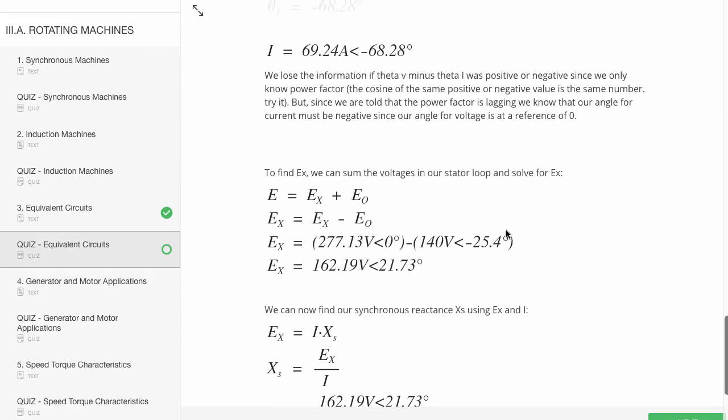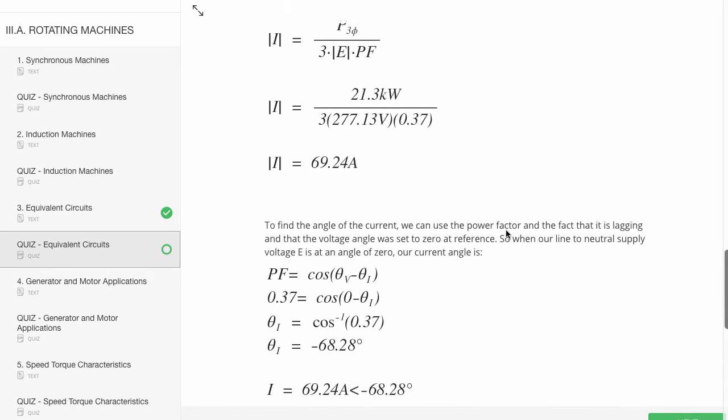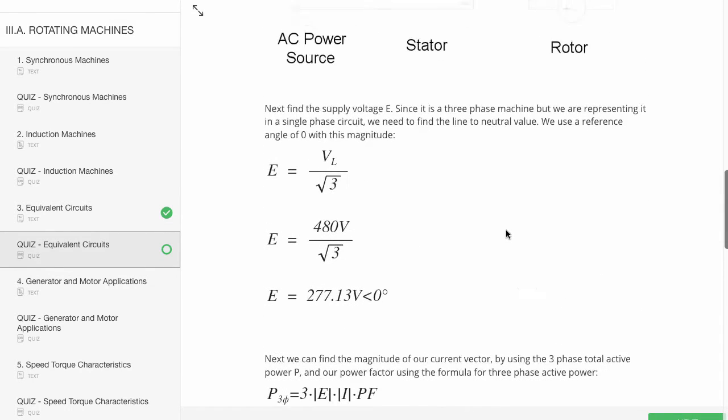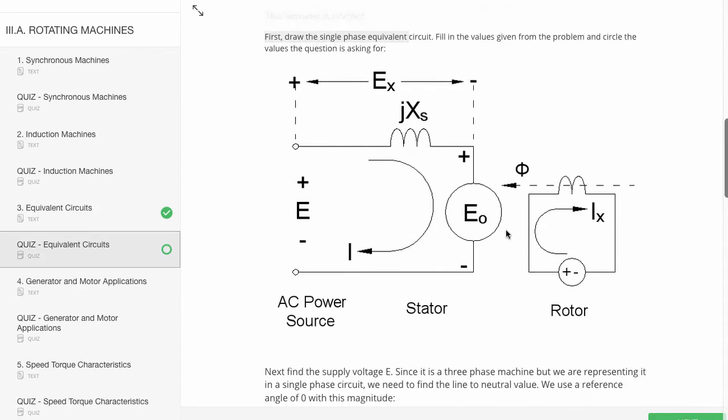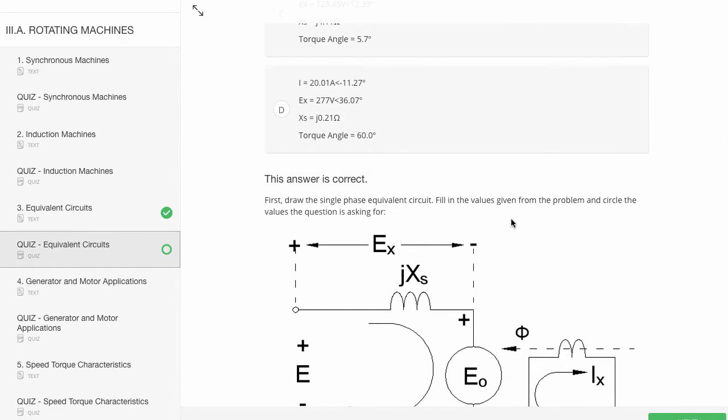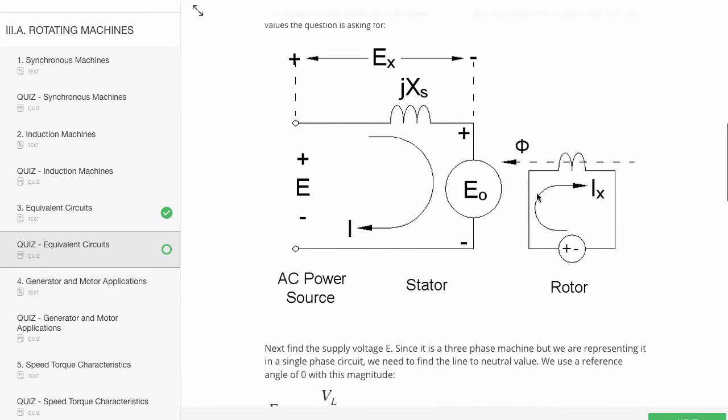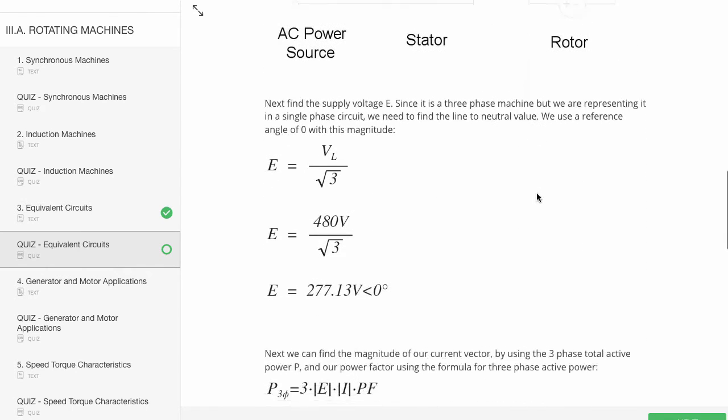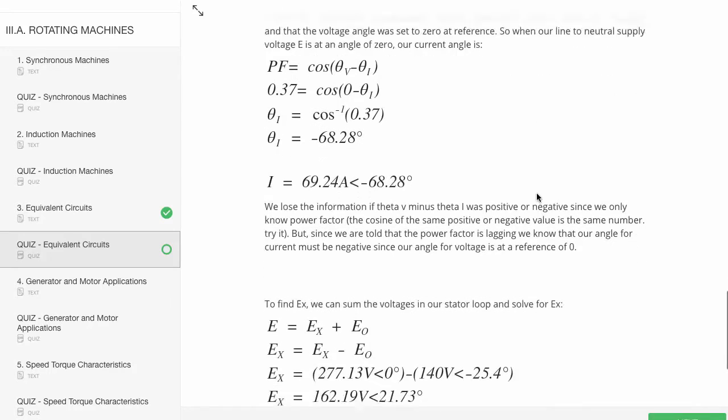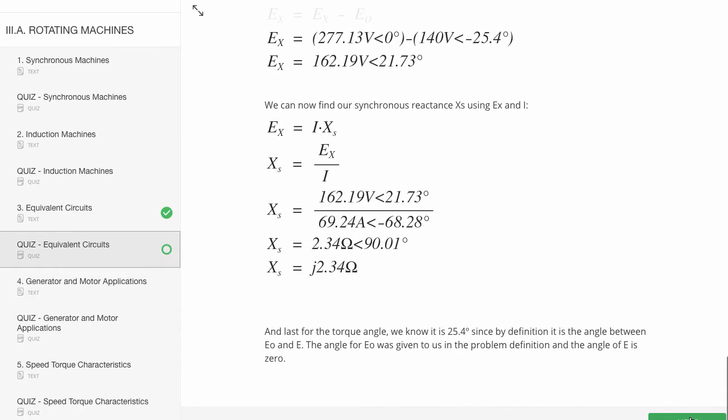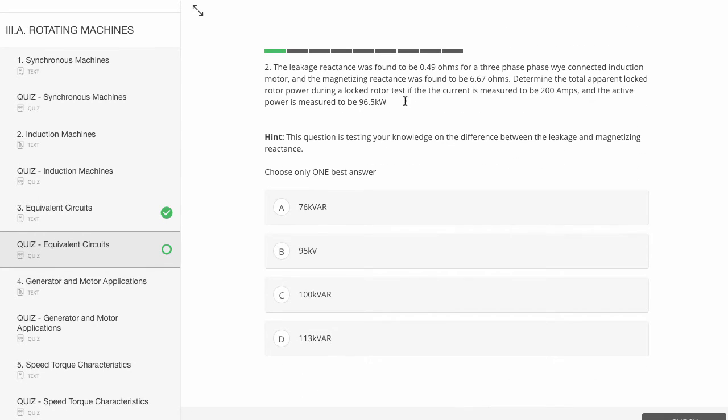I'm sure you've had the frustrating experience before of using a review book where you try to follow the solution to an example that you just can't quite get. And the solution is so vague. Maybe they just use one formula or two and you can't really figure out how they got from step to step. You don't have to worry about that. All of the quiz sample problems have detailed step-by-step solutions.